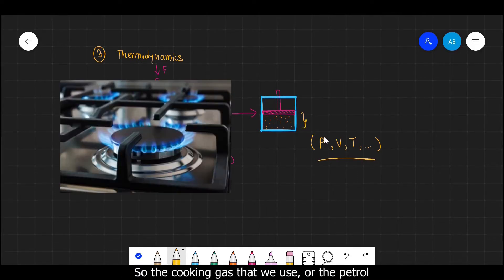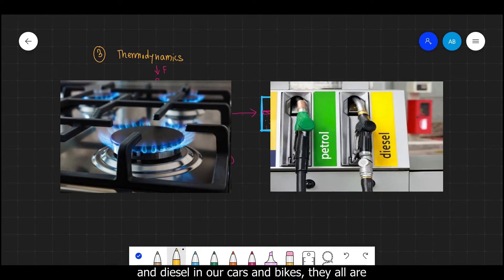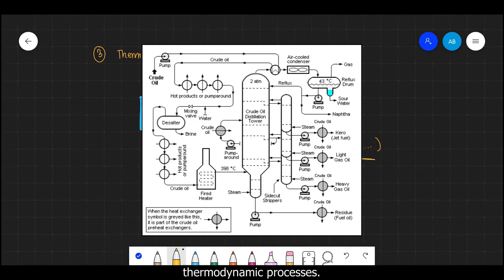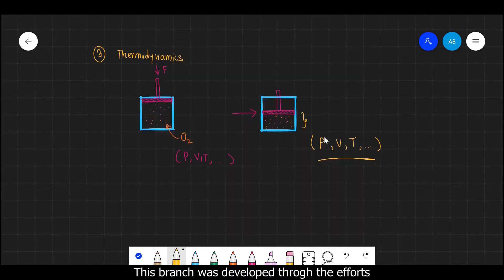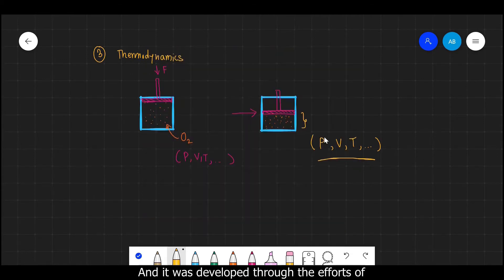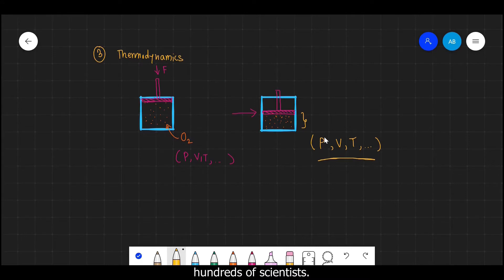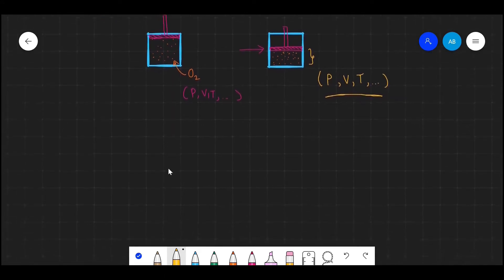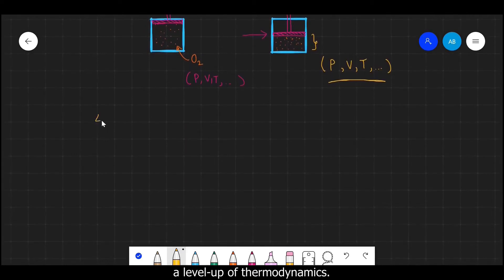So the cooking gas that we use or the petrol and diesel in our cars and bikes, they all are obtained through the study of various thermodynamic processes. This branch was developed through the efforts of improving heat engines back in the days. And it was developed through the efforts of hundreds of scientists.